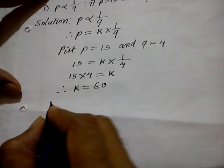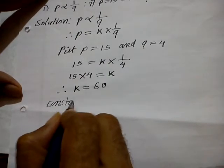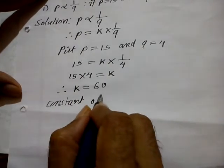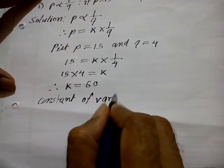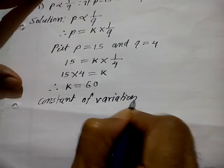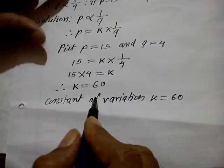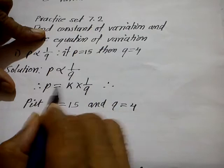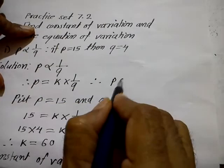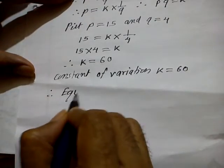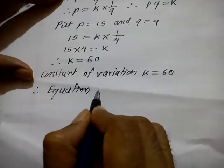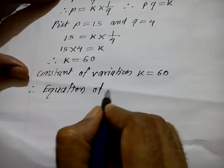The constant of variation K is equal to 60. The equation of variation is P into Q is equal to 60.